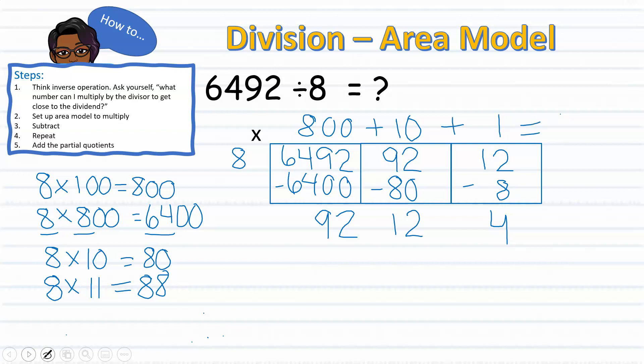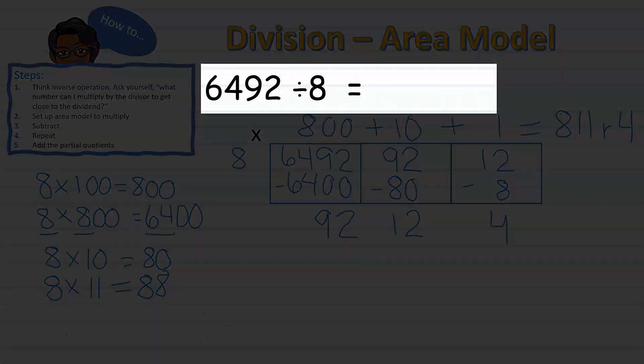Now it is time to complete the final step, which is to add the partial quotients. 800 plus 10 and 1 equal 811 with a remainder of 4. Therefore, I know that 6,492 divided by 8 equals 811 with a remainder of 4.